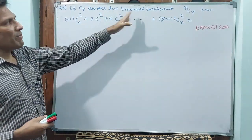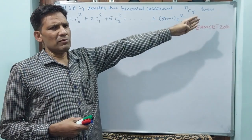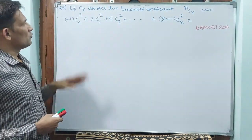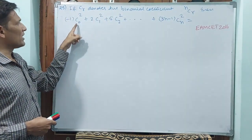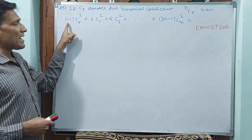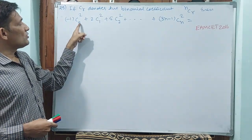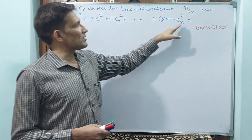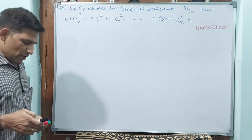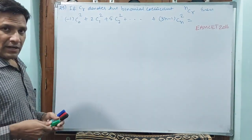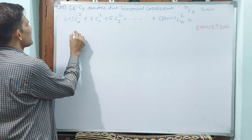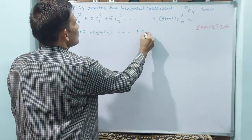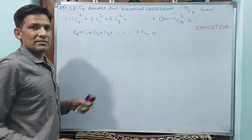If CR denotes the binomial coefficient for NCR — we know very well the binomial coefficient for NCR, we are going to show as CR. They did not write it, even though we can understand. See here: minus 1 is there, C0 squared, 2·C1 squared, 5·C2 squared, (3N minus 1)·Cn squared, up to there.